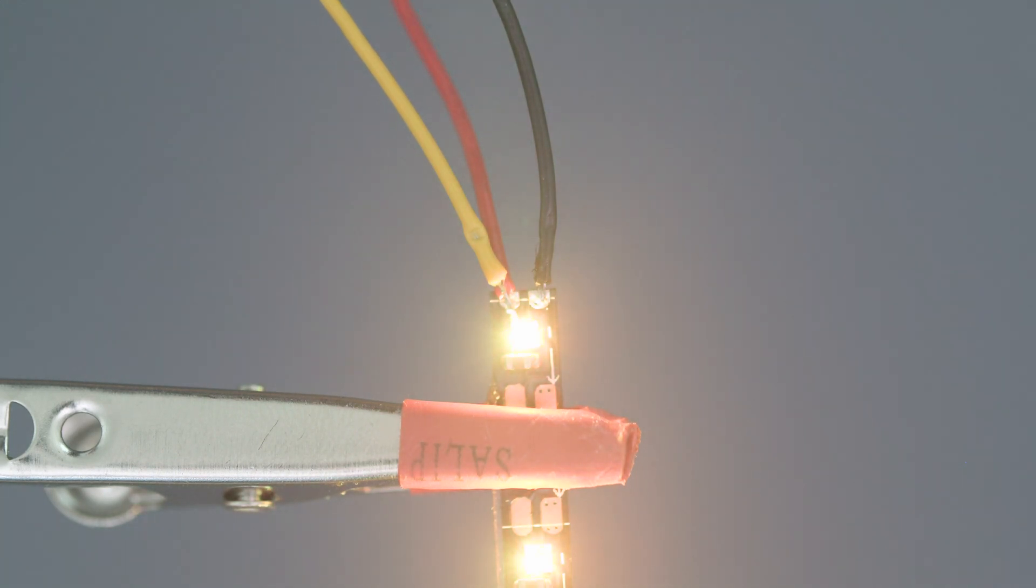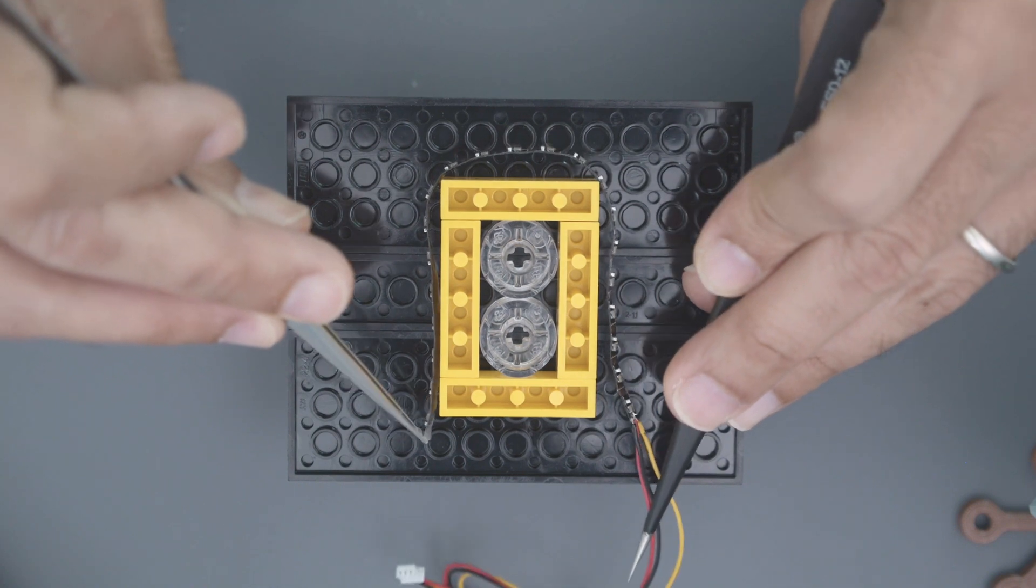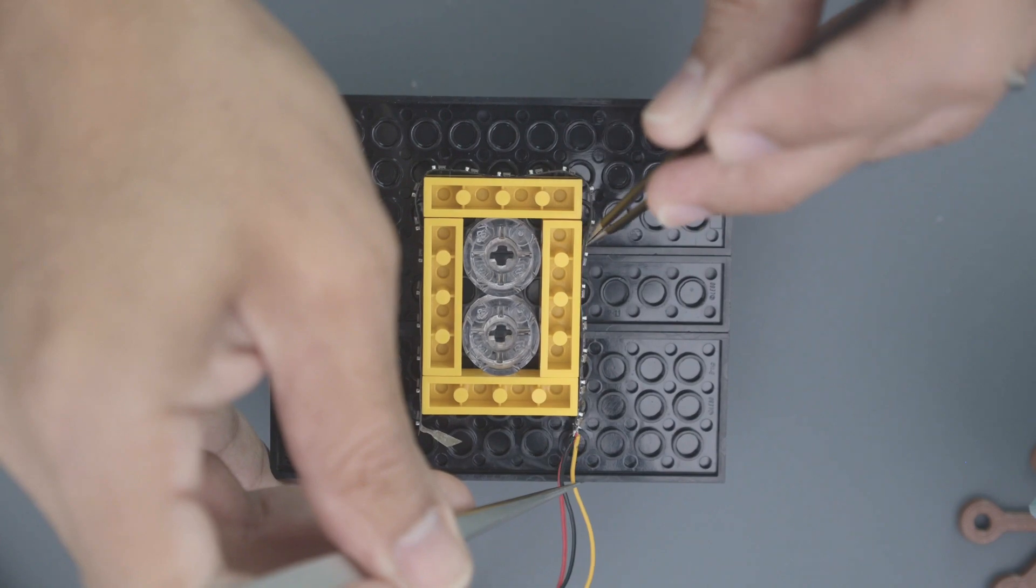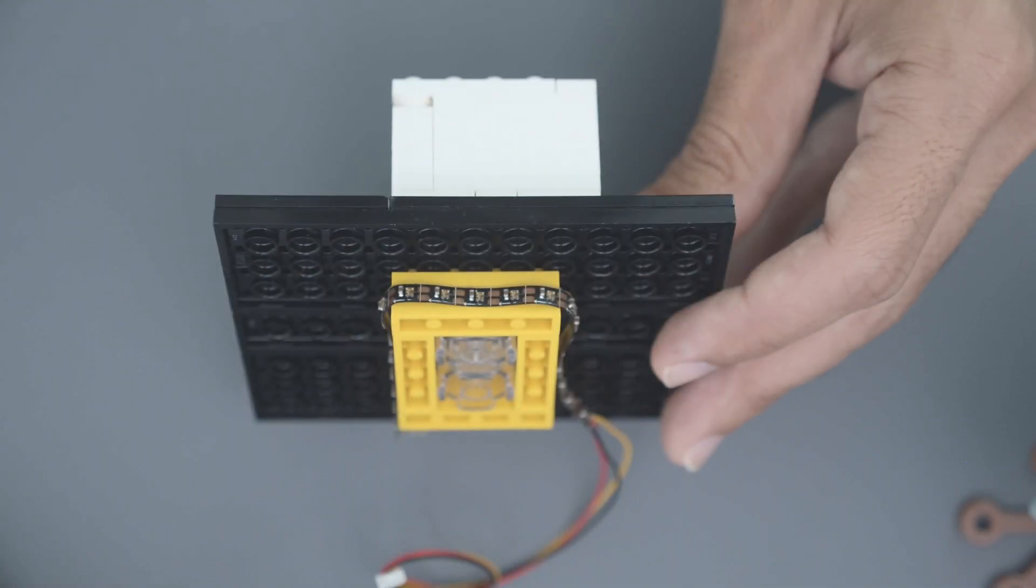We made sure to test the strip out before embedding it into the Lego set. The strip is flexible so it can wrap around the drop ceiling of the Lego set. It features a sticky backing so it's really easy to mount it to surfaces.